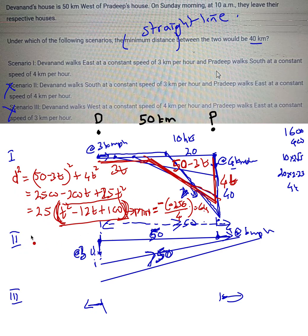So d² is 25 times 64. The minimum value of d, taking the square root, is going to be 5 times 8, which is 40. So indeed, at one point of time, the minimum value of the distance between them is going to be 40 kilometers. Under scenario one, the minimum would be 40.